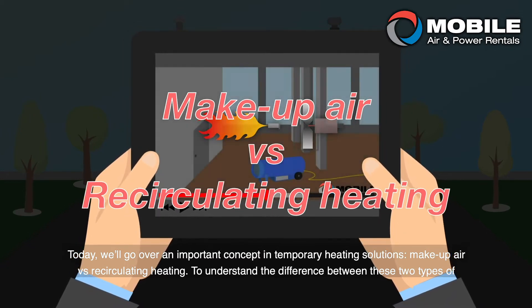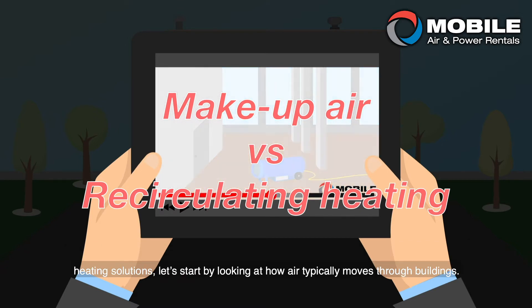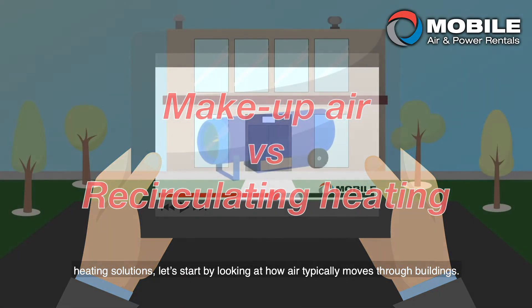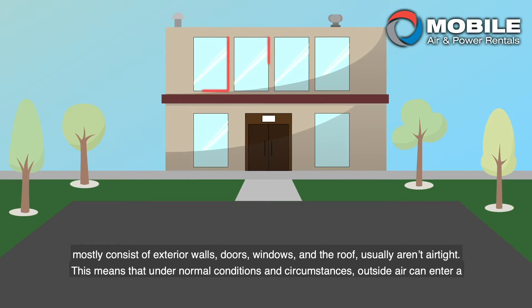To understand the difference between these two types of heating solutions, let's start by looking at how air typically moves through buildings. In any building, such as an office or home, the surfaces that separate the inside air from the outside are collectively referred to as the building envelope. These surfaces, which mostly consist of exterior walls, doors, windows, and the roof, usually aren't airtight.